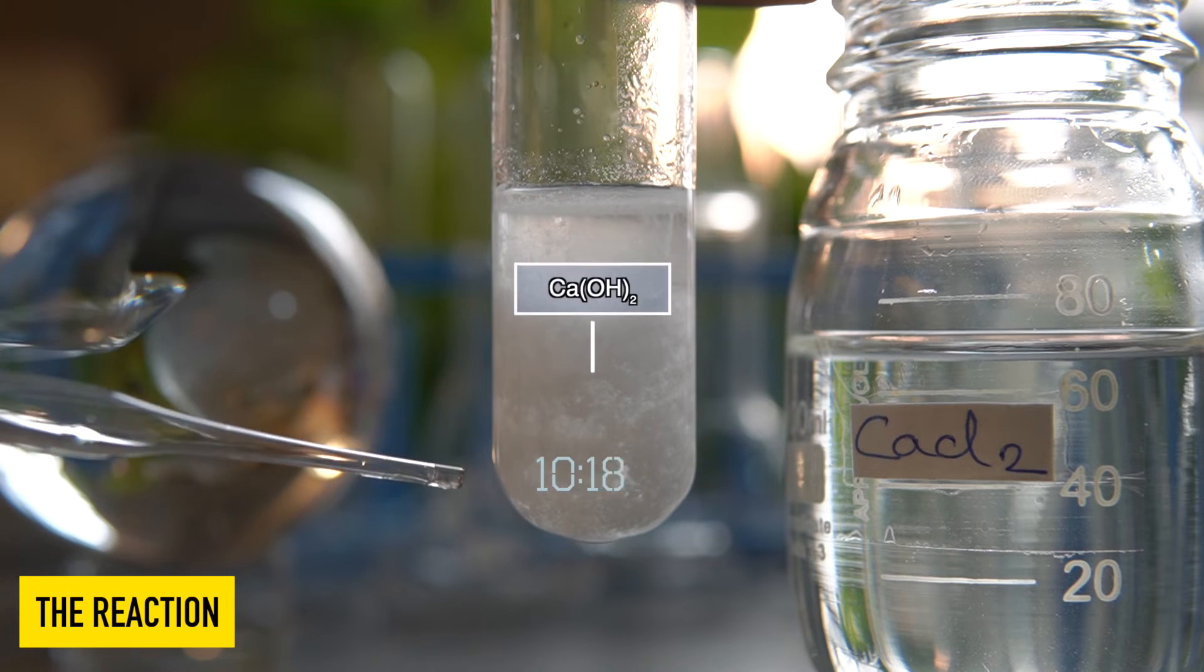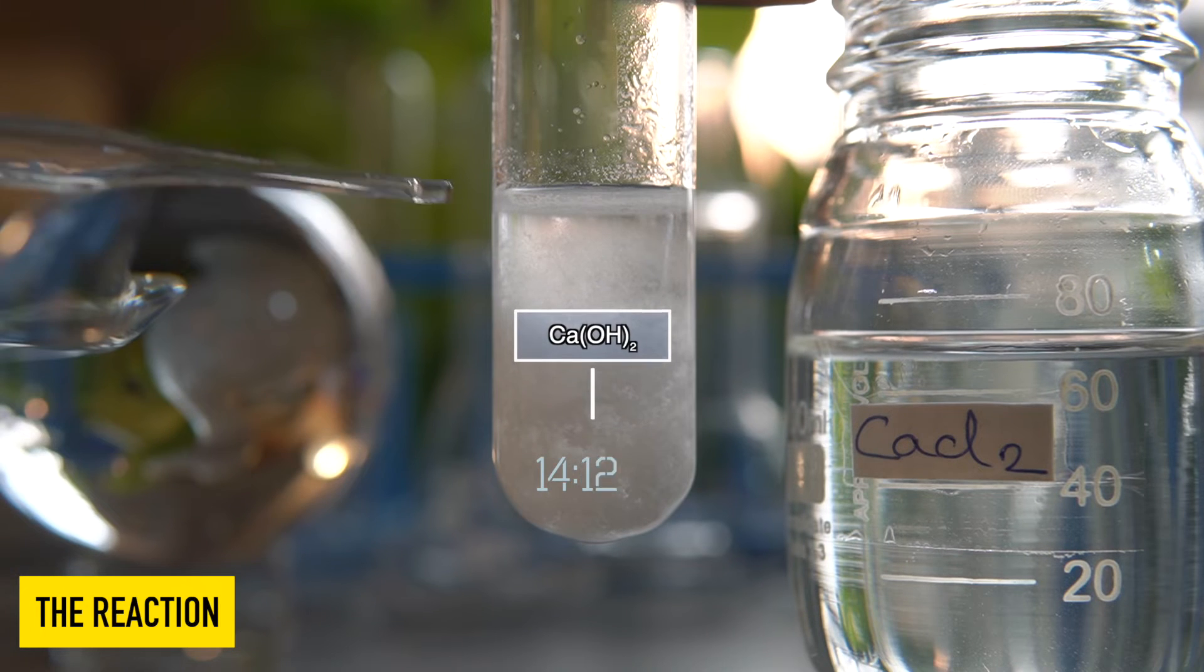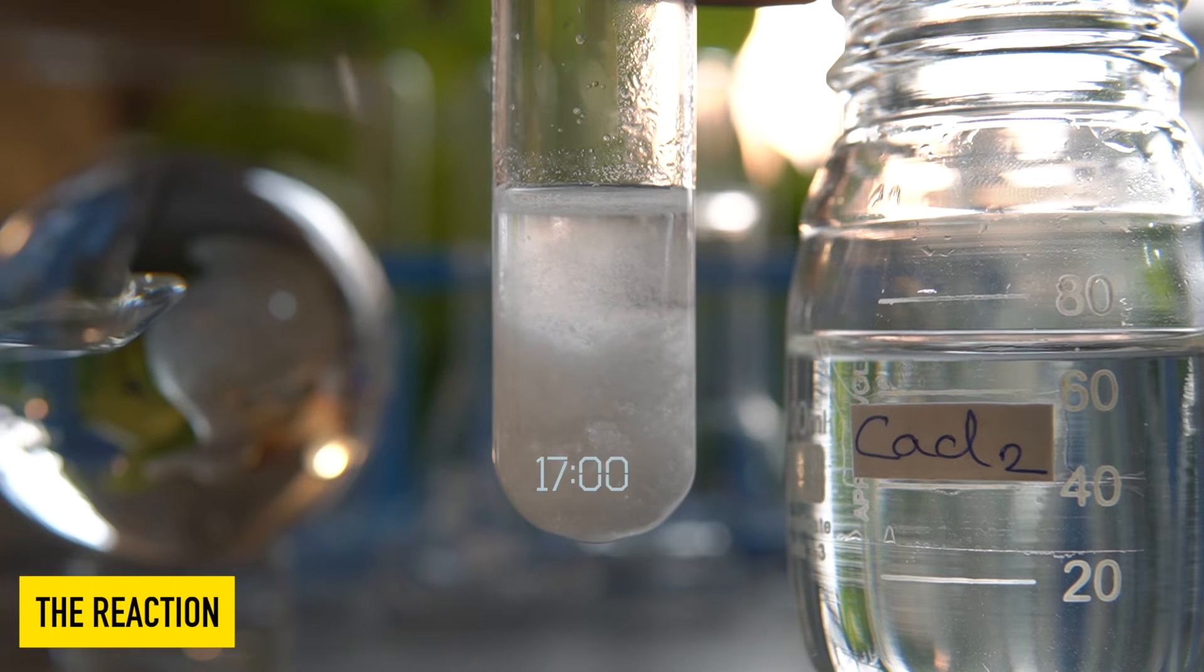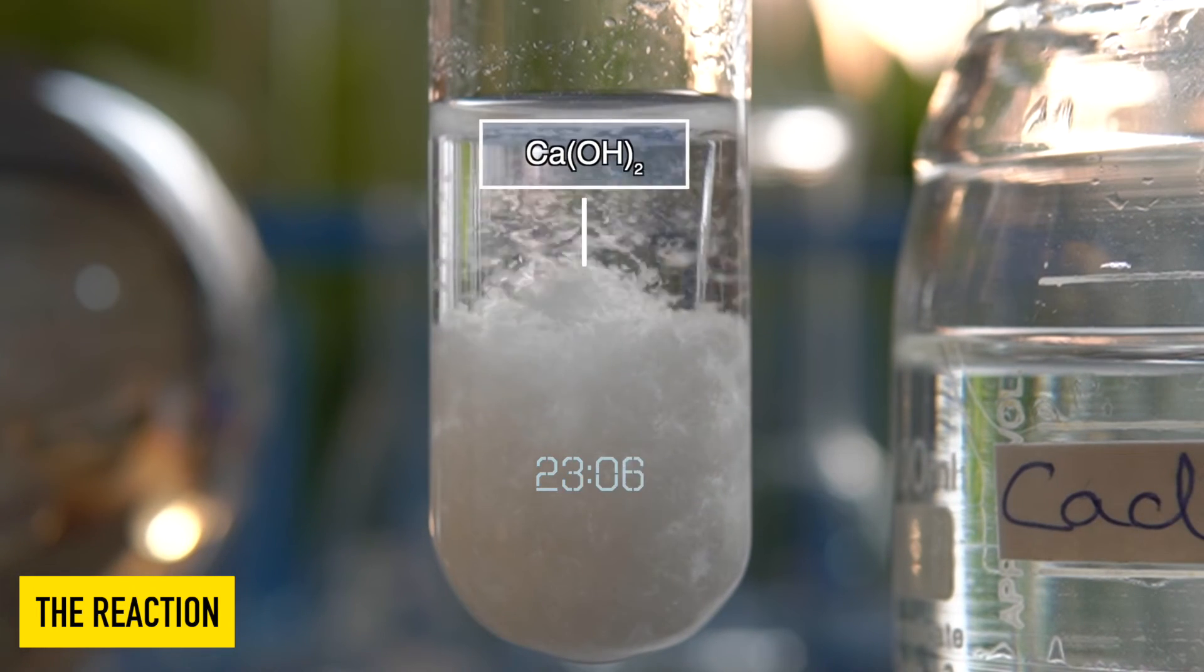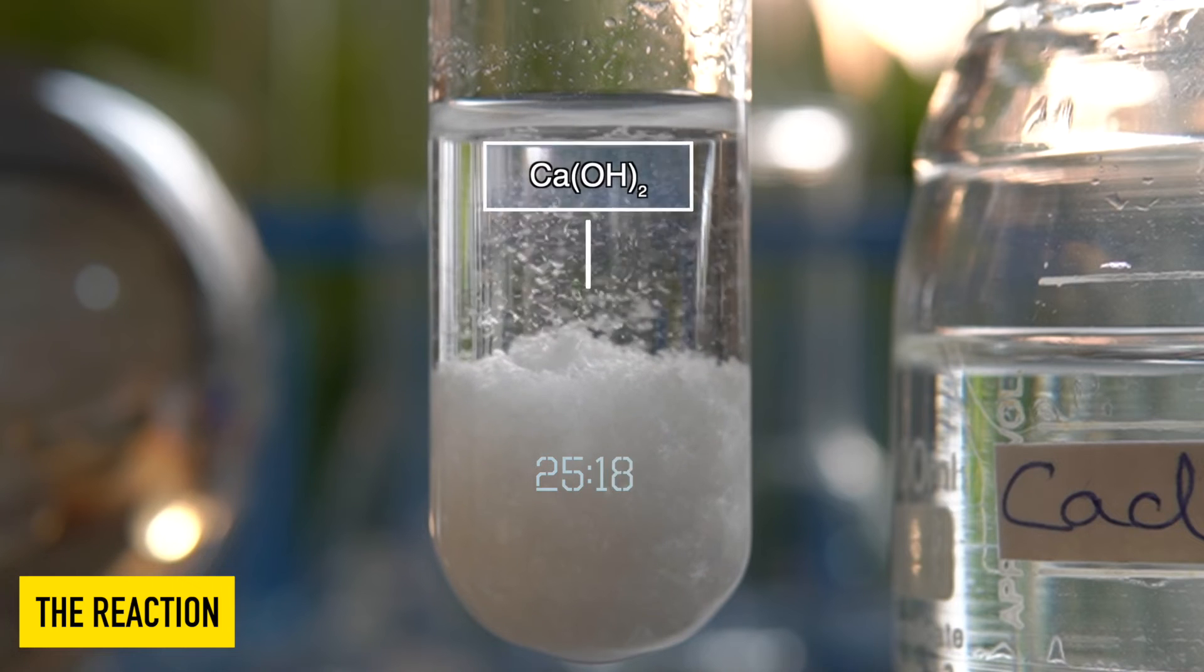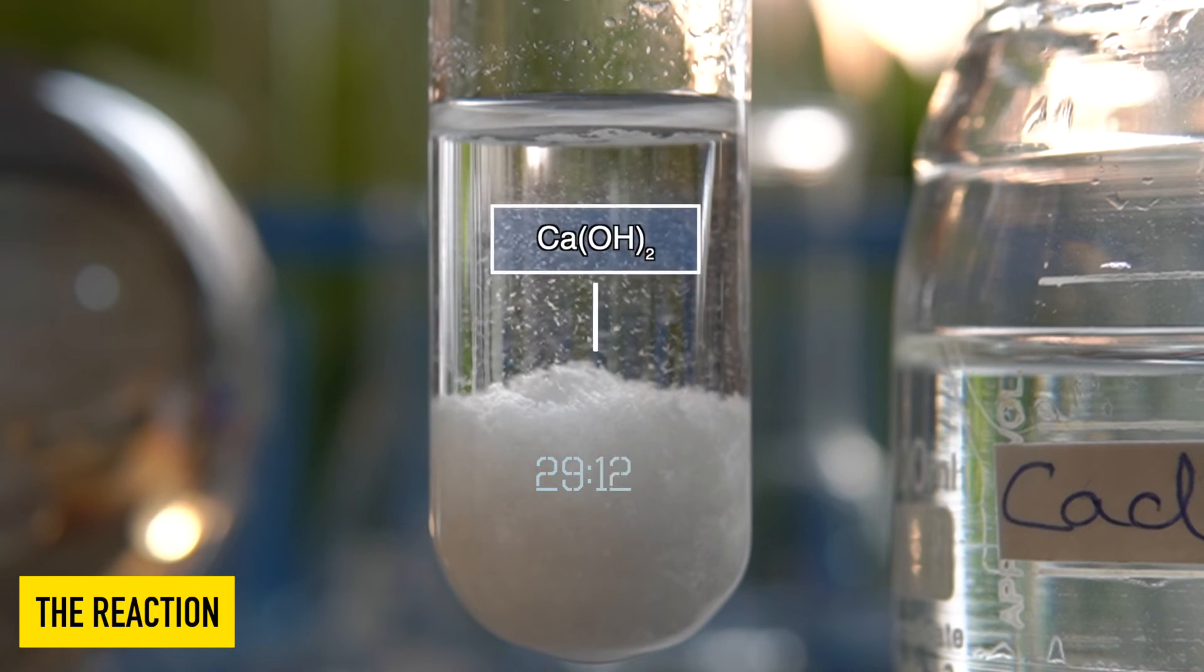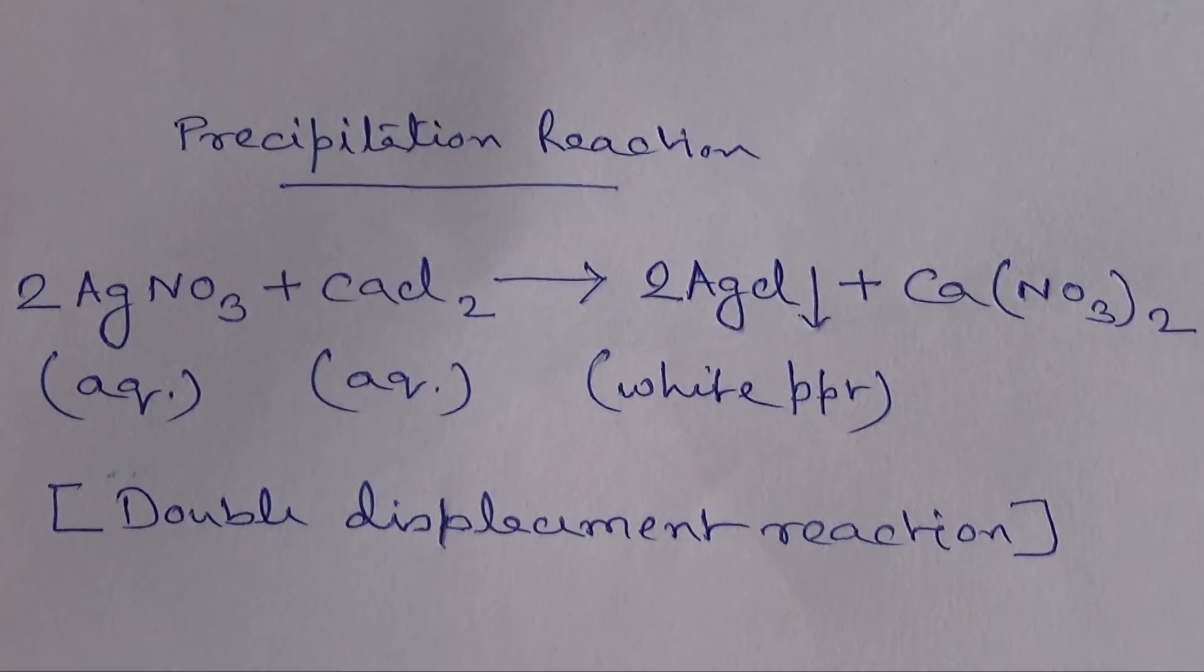has been formed at the bottom of the test tube is nothing but calcium hydroxide. So here, aqueous solution of silver nitrate reacts with aqueous solution of calcium chloride to produce a white precipitate of silver chloride along with calcium nitrate.